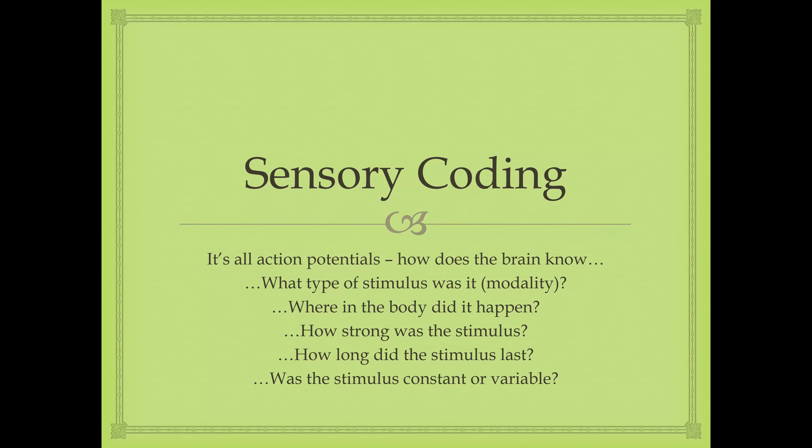This section covers sensory coding—how the brain knows what type of stimulus it was, where it happened in the body, how strong it was, how long it lasted, and whether it was constant or variable. It's all action potentials going to your brain, so how does the brain determine these things? We're going to discuss how your brain can determine the modality, location, intensity, duration, and variation of a stimulus.